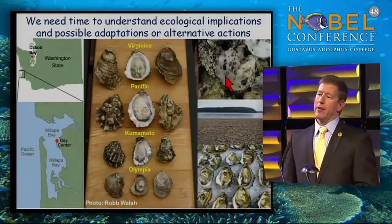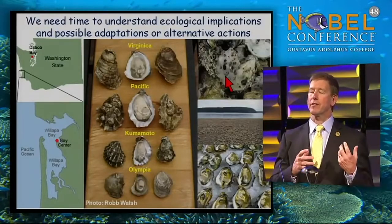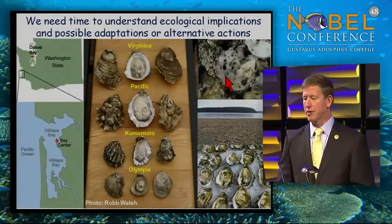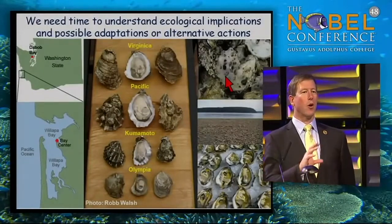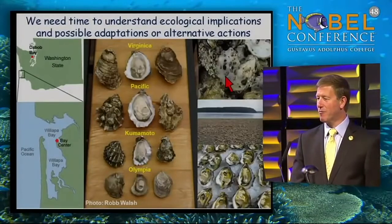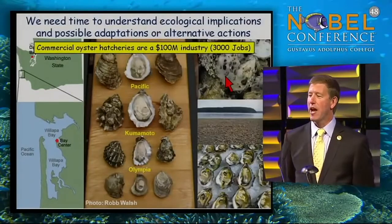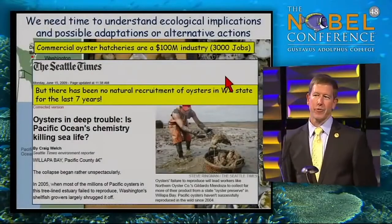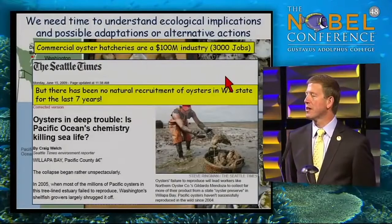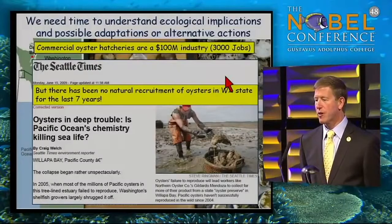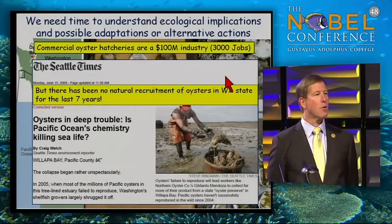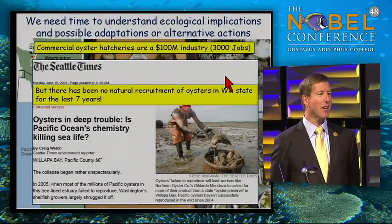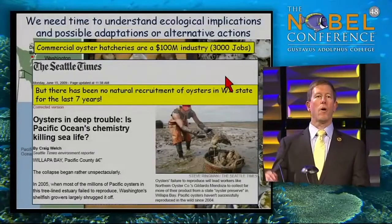Let me tell you one more story about oysters. Oysters are a big industry in the Pacific Northwest — commercial hatcheries are about a $100 million a year industry, about 3,000 jobs. Yet for the last seven years, there's been essentially zero recruitment of new baby oysters into the wild natural estuaries. The Chesapeake Bay oyster industry has already collapsed. We're seeing this all around the country and all around the world.